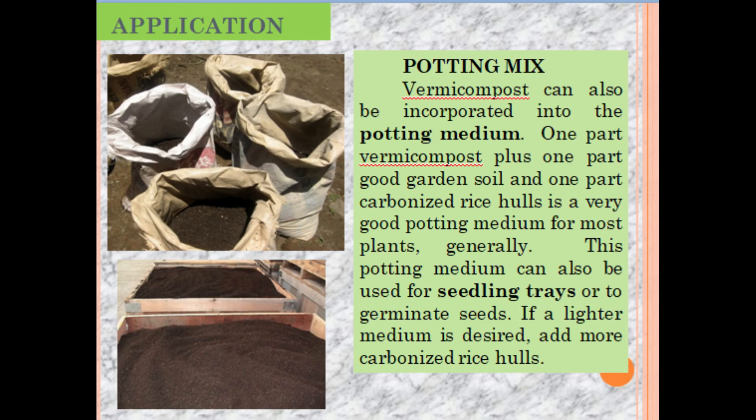Vermicast can also be used as an ingredient for potting mix, which is a good business opportunity. Combine one part garden soil, one part carbonized rice hull, and one part vermicast. The ratio is 1:1:1.